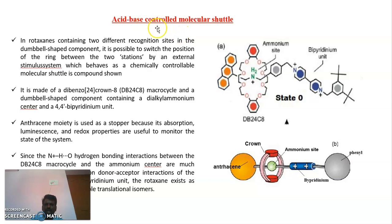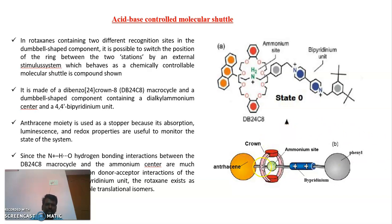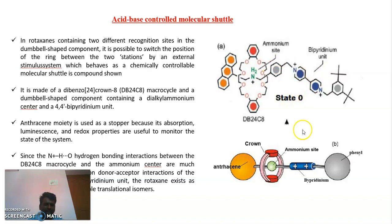This acid-base controlled molecular shuttle is made up of one rotaxane. This is the 3D model for the rotaxane molecule. This is the actual chemical structure of that rotaxane, and this is the model to compare. So now we can compare both of these.